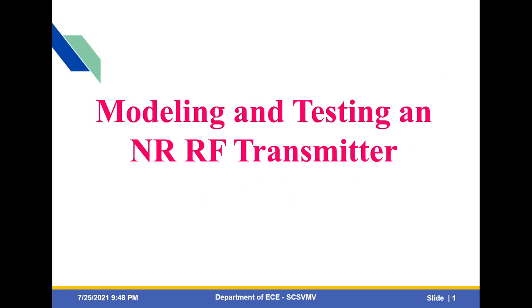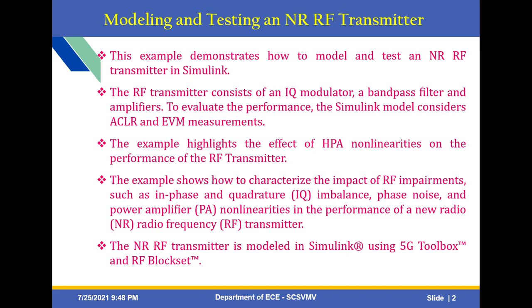This PPT shows the modeling and testing of the NR RF transmitter. This example demonstrates how to model and test a new radio RF transmitter in Simulink. The RF transmitter consists of an IQ modulator, a bandpass filter, and amplifiers. The Simulink model considers ACLR and EVM measurements to evaluate performance. This example also highlights the effects of HPA nonlinearities — high power amplifier nonlinearities — on the performance of RF transmitters, and shows how to characterize the impact of RF impairments such as in-phase and quadrature imbalance, phase noise, and power amplifier nonlinearities.